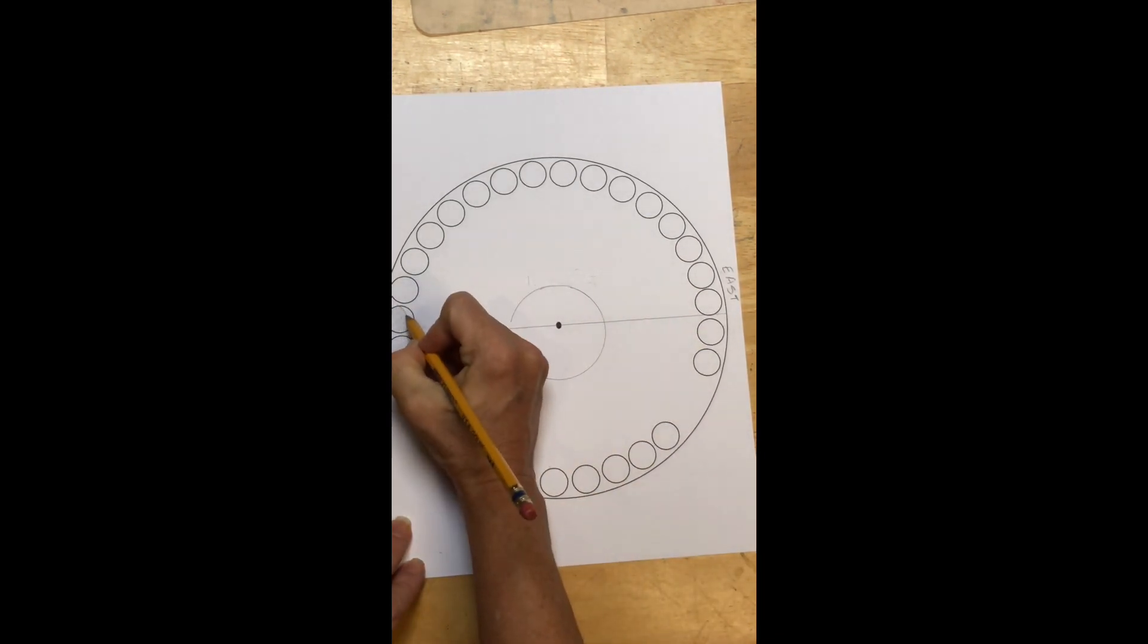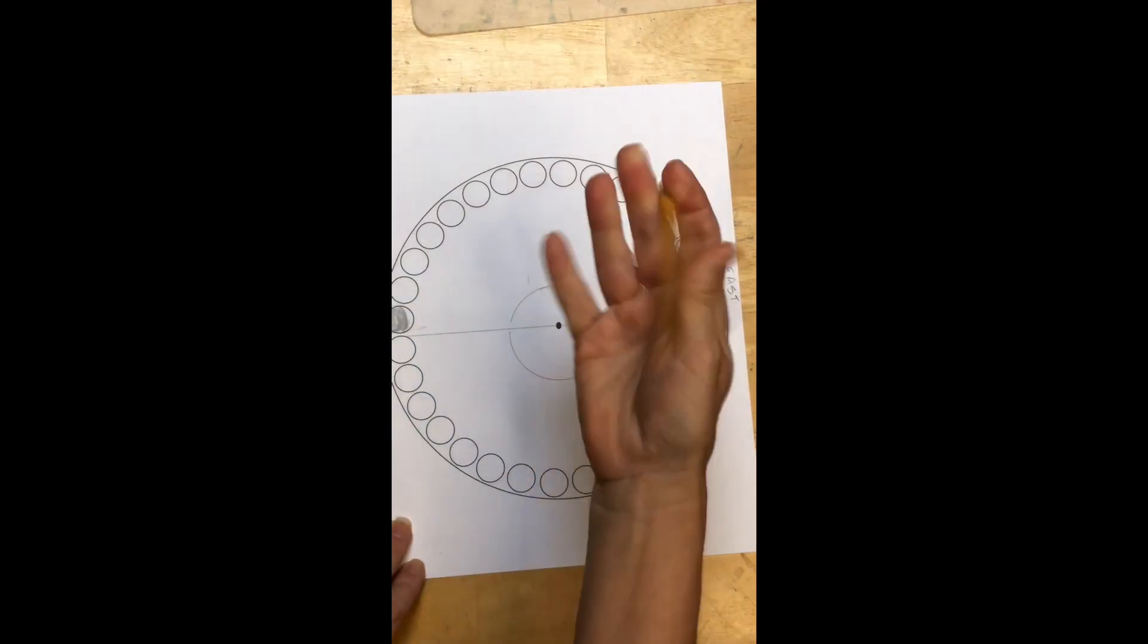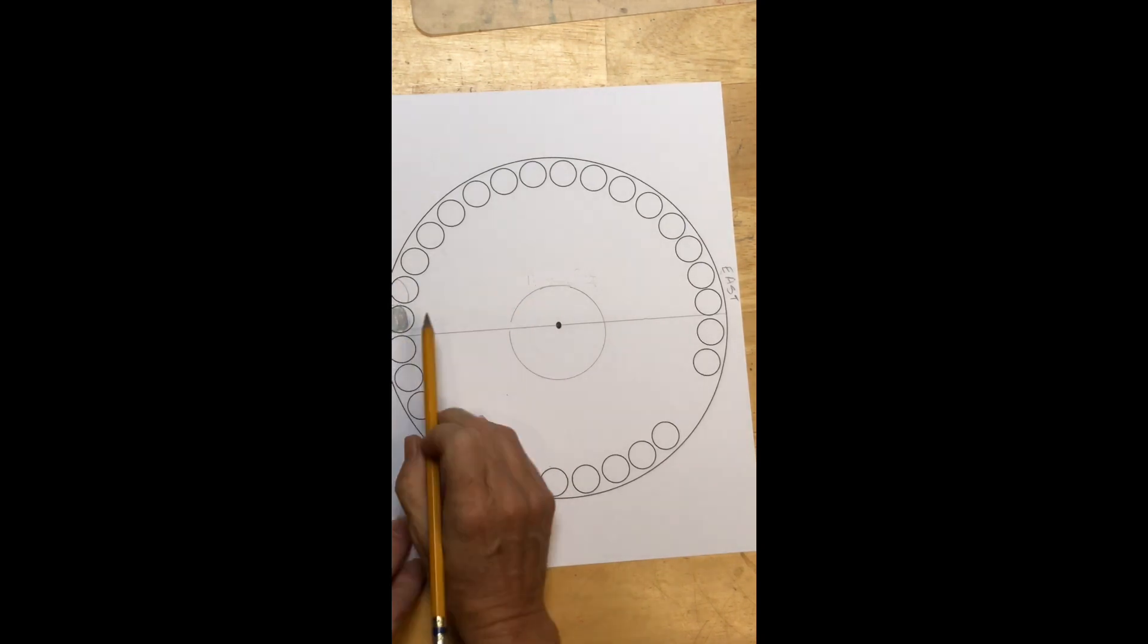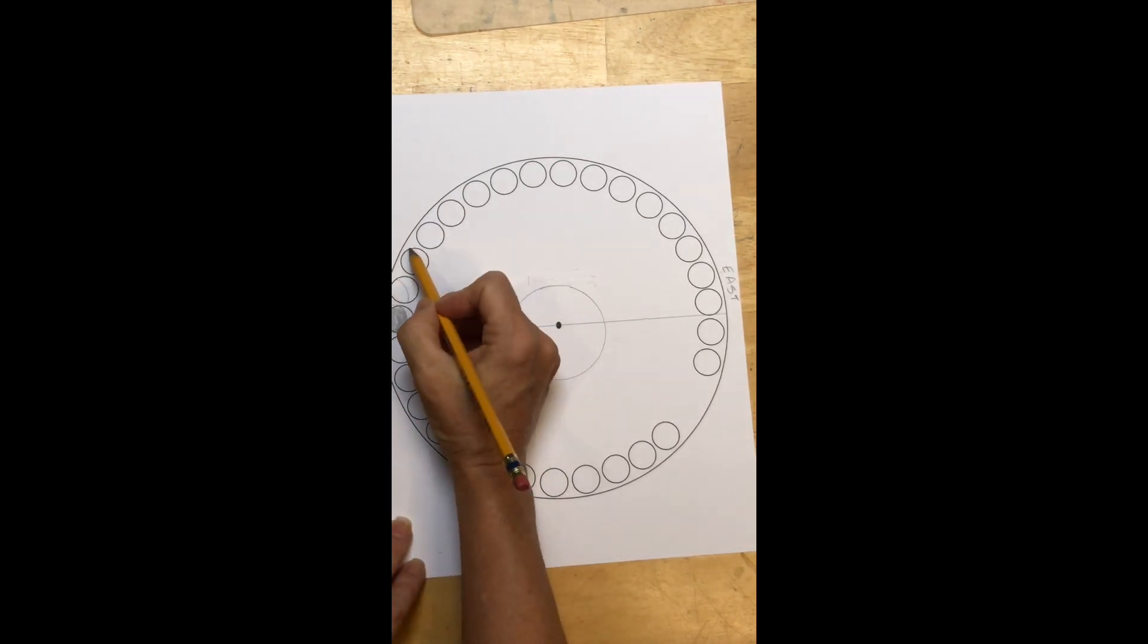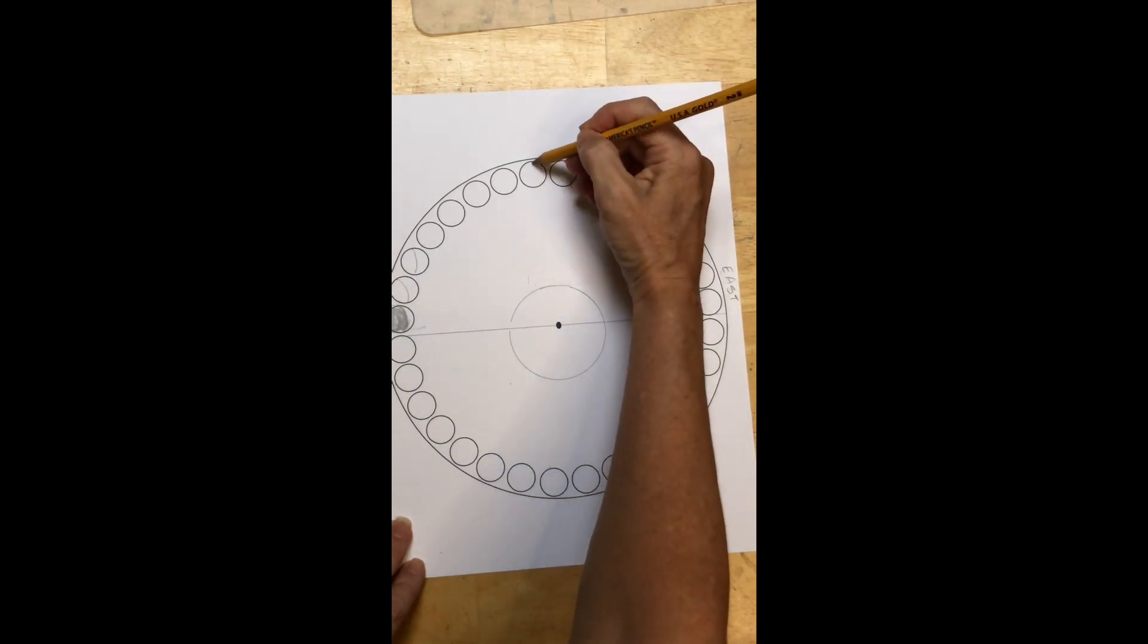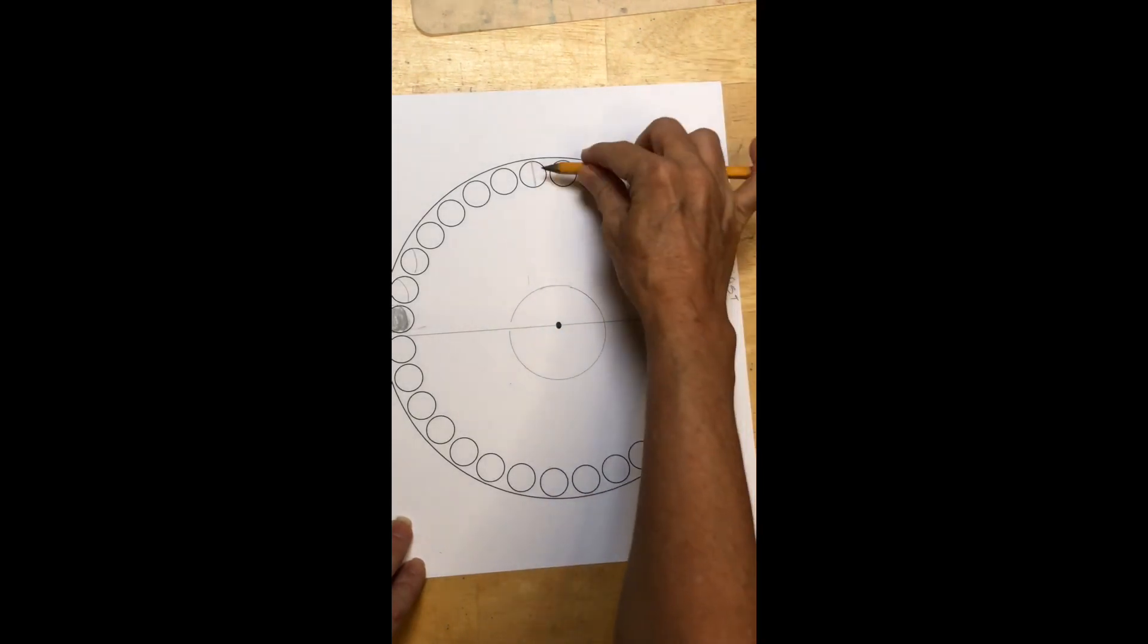So initially we'll see just the crescent over here and then that will start to widen. The same time but the moon will be a little higher and widen and it will be a little higher and continue to do this till we hit the quarter moon somewhere up here.